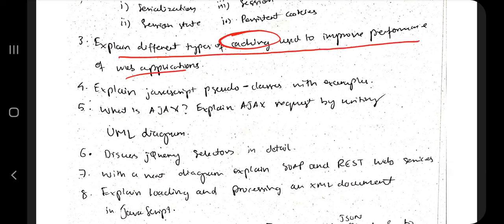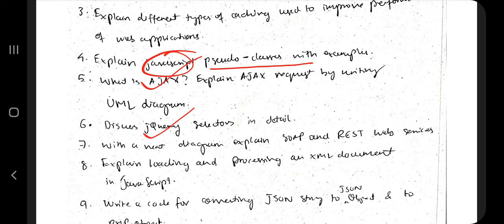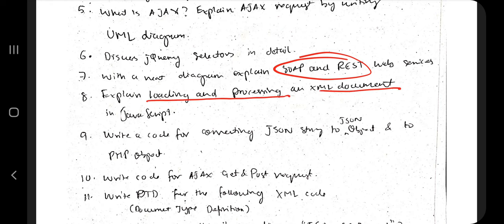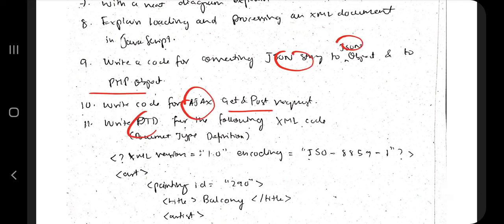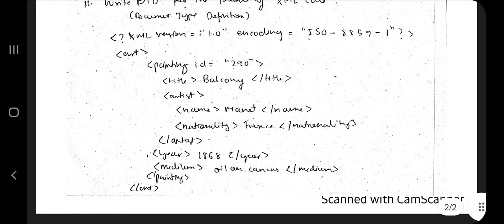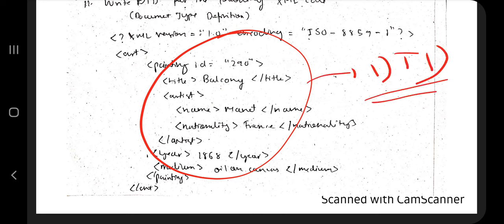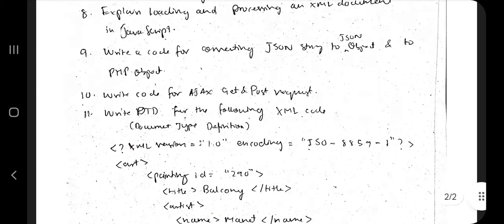Explain the different types of caching used to improve performance — that also comes under cookies. Explain JavaScript pseudo classes with examples — that's from Chapter 2. Ajax and jQuery selectors are very important questions. Explain SOAP and REST web services, loading and processing XML documents in JavaScript, writing code for JSON string to JSON object, PHP object, Ajax GET and POST requests, and DTD for a given XML code — that's Document Type Definition. We'll be learning how to convert XML code into DTD in Chapter 3.